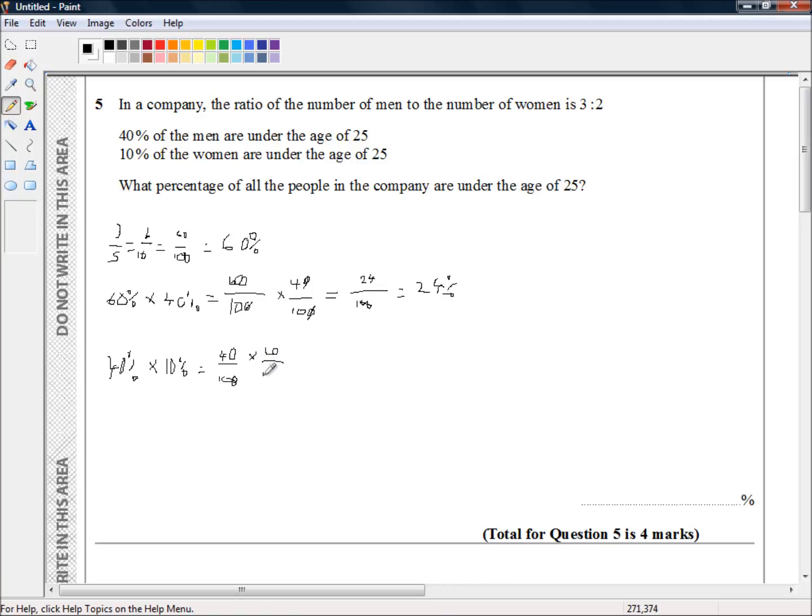When multiplying fractions, we multiply the numerators and multiply the denominators. But first, we can cancel to simplify. We've got 4/10 times 10/100, which simplifies...